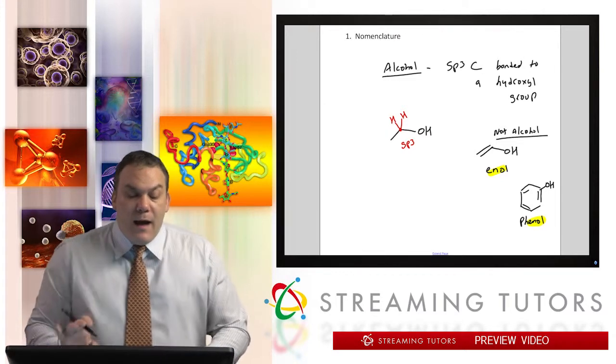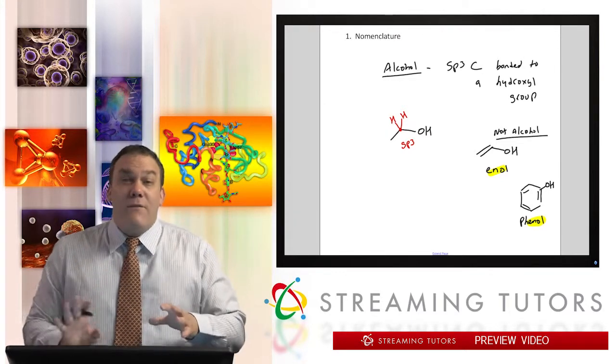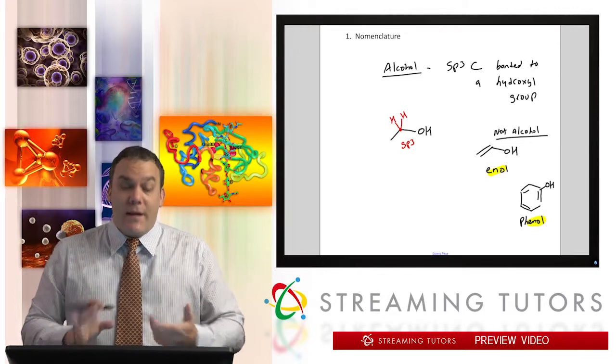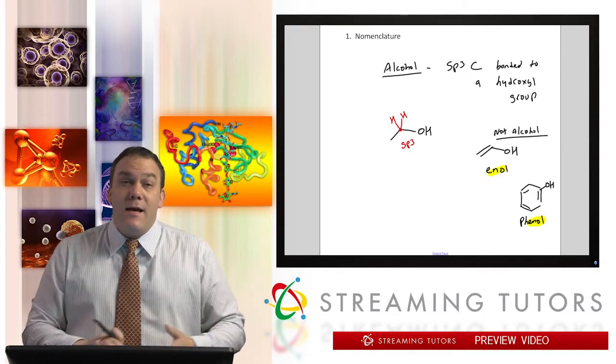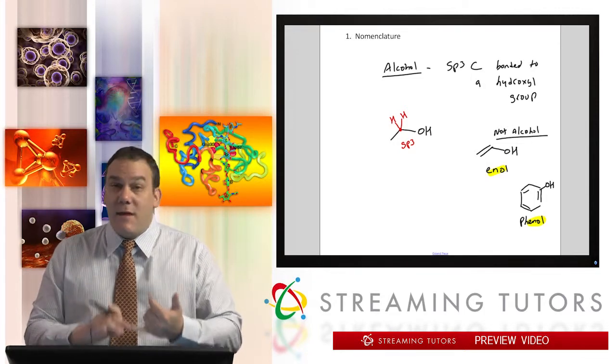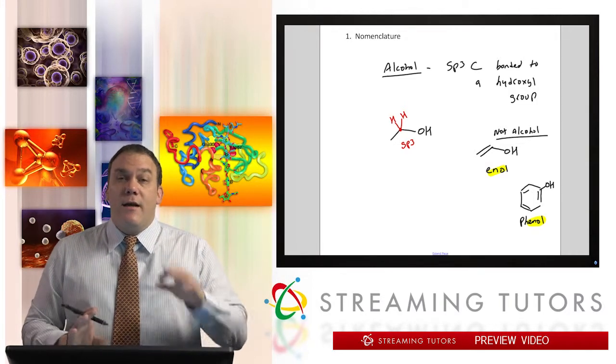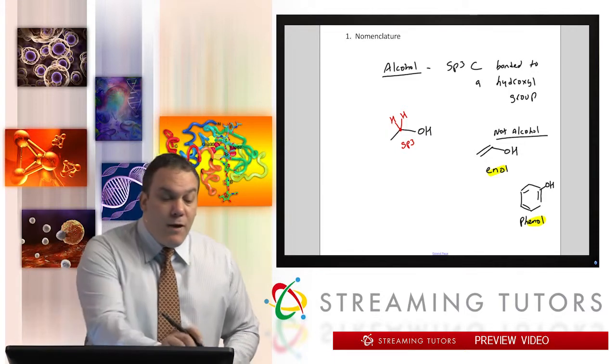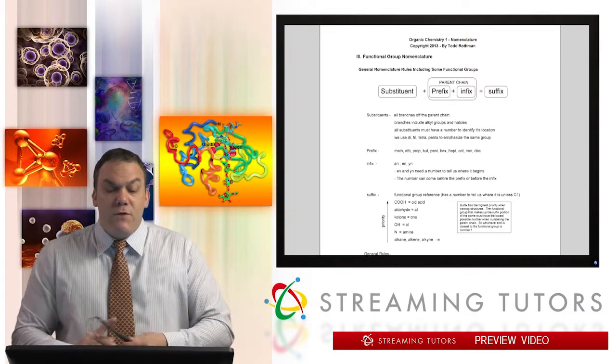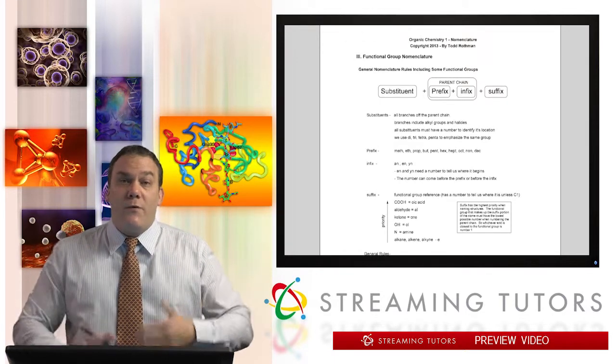Now, alcohols, we know, have a lot of different reactivity, has different properties to it. It could act as an acid, it could act as a base, it could act as a nucleophile, it could act as a leaving group. So it has a lot of reactivity that you don't see in an enol. Keep that in mind. Now I want to go over this because this is the master chart that we went through when we learned about how to name molecules.